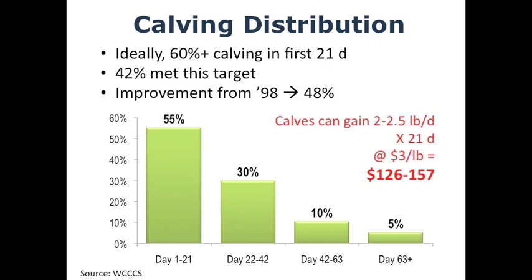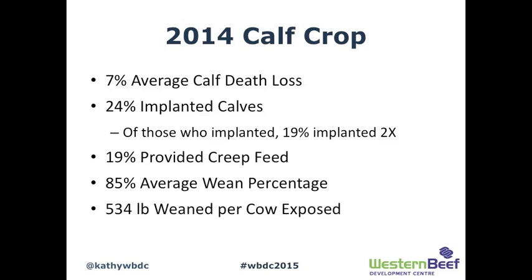In terms of how the calf crop fared, average calf death loss was 7%. Less than one-quarter of producers implanted their calves, and of those who did, less than 20% implanted twice — options being prior to weaning and at weaning. 19% provided creep feed to their 2014 calves. Weaned percentage on average was 85%, and average pounds weaned per cow exposed was 534.